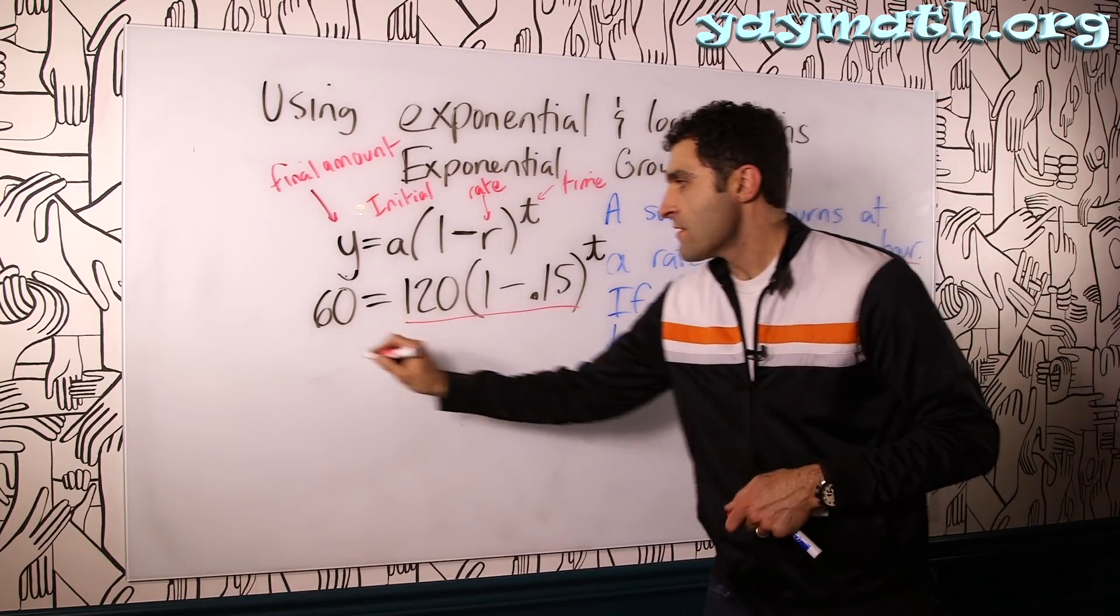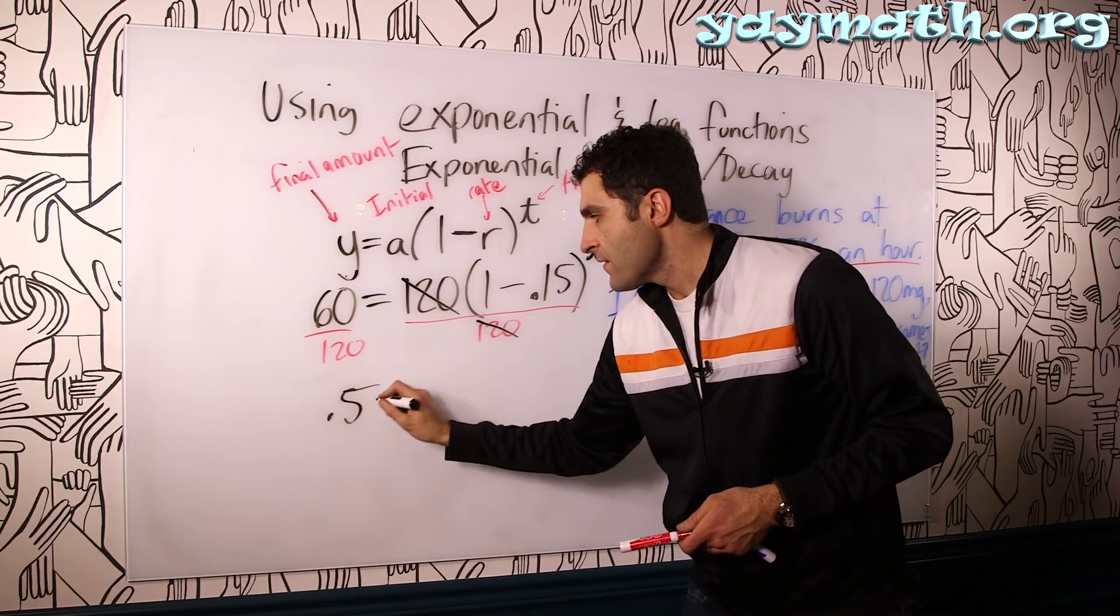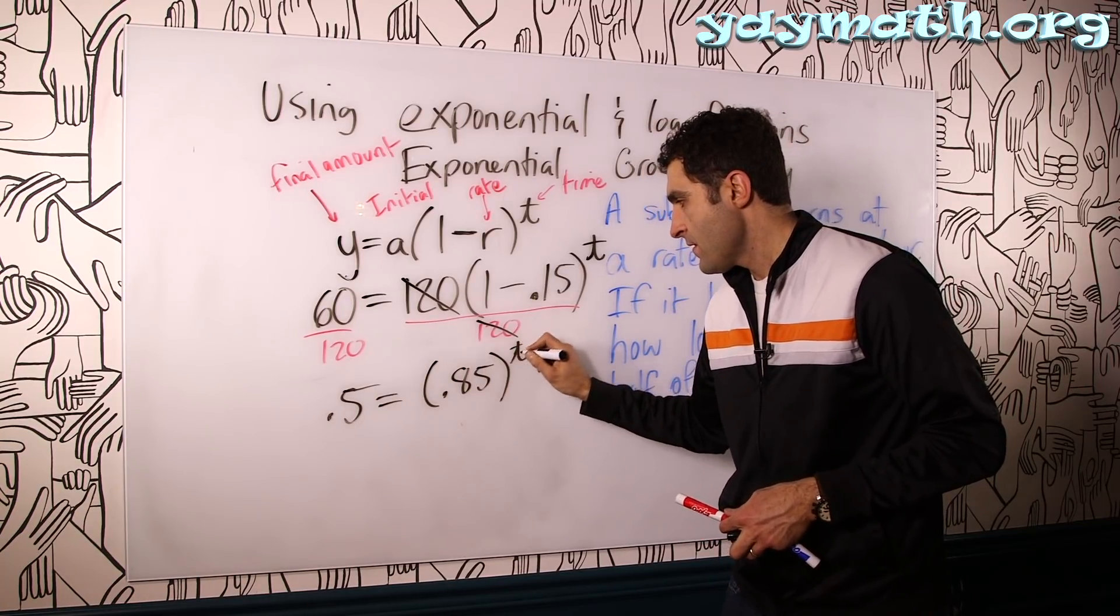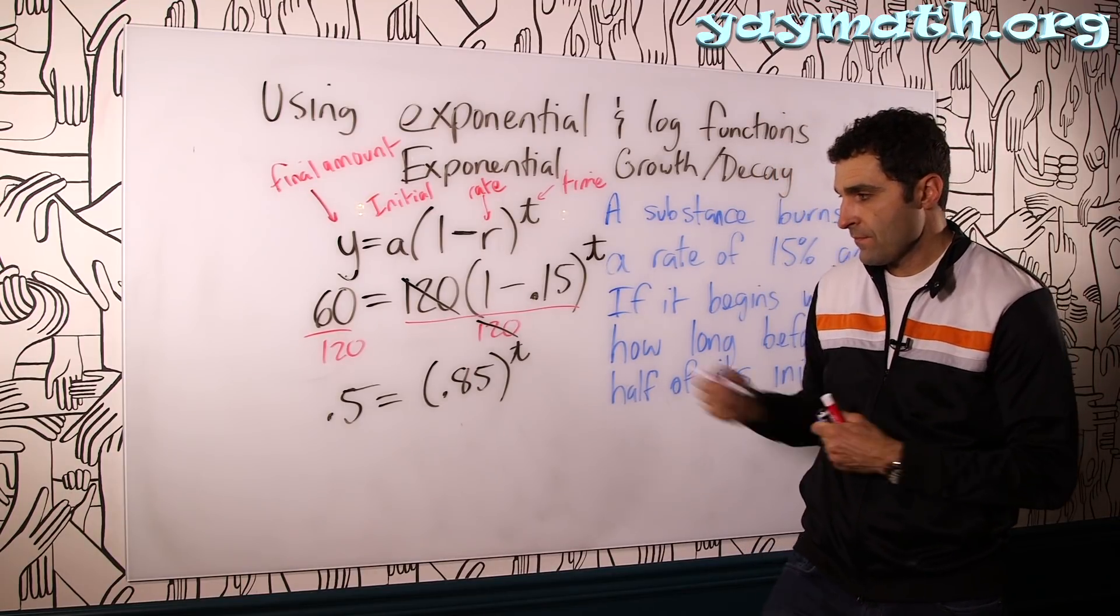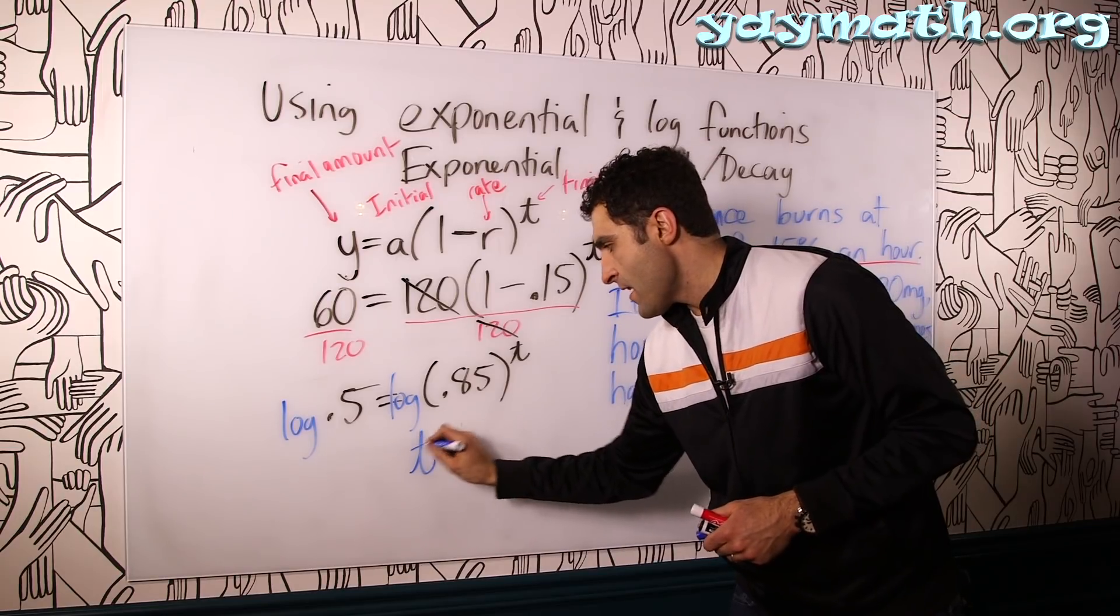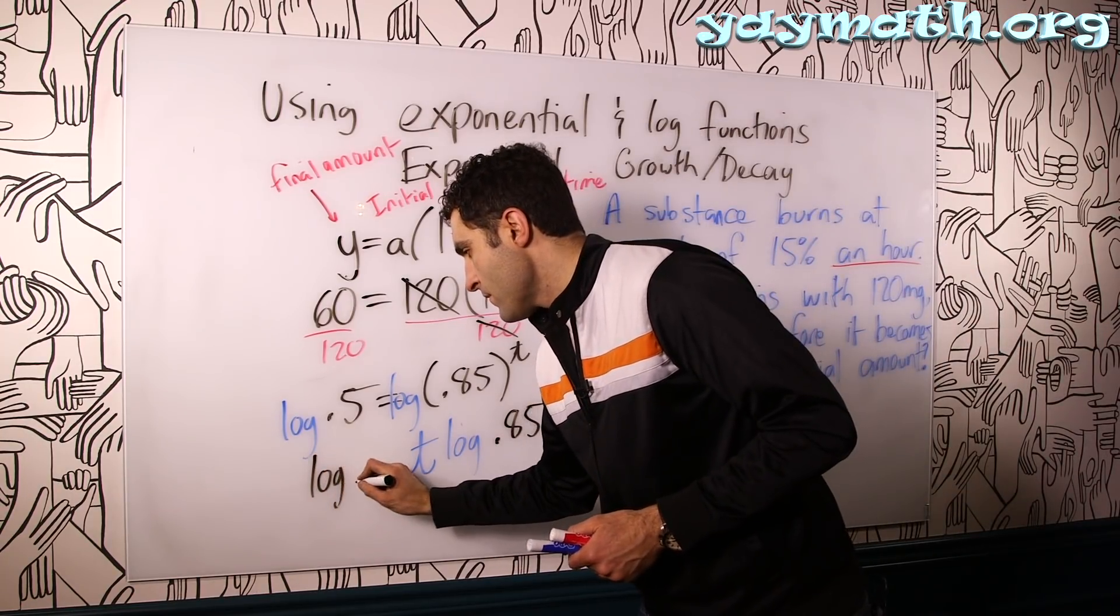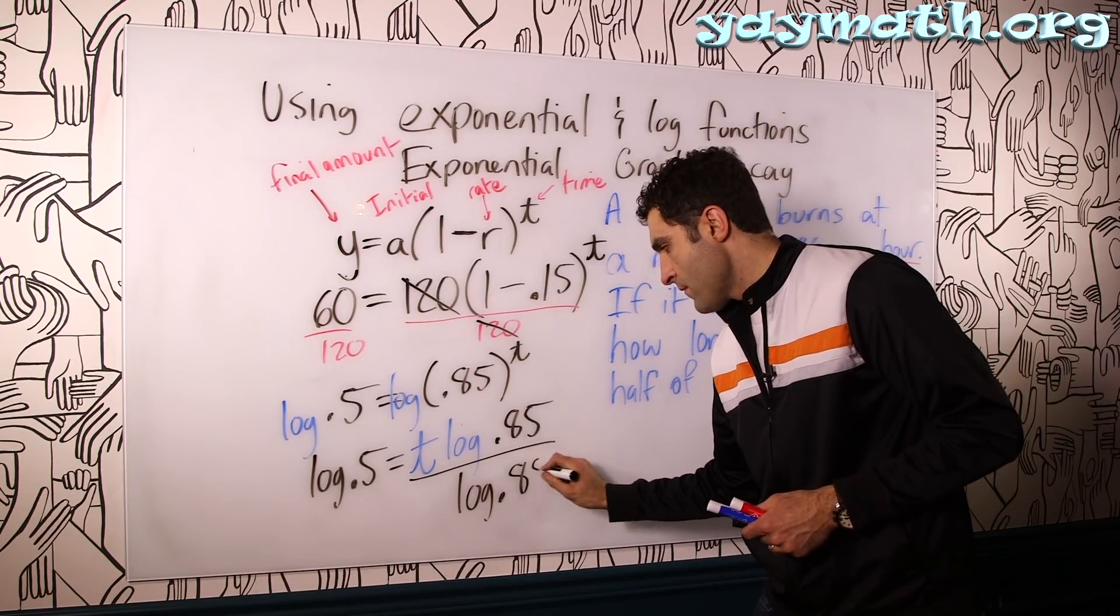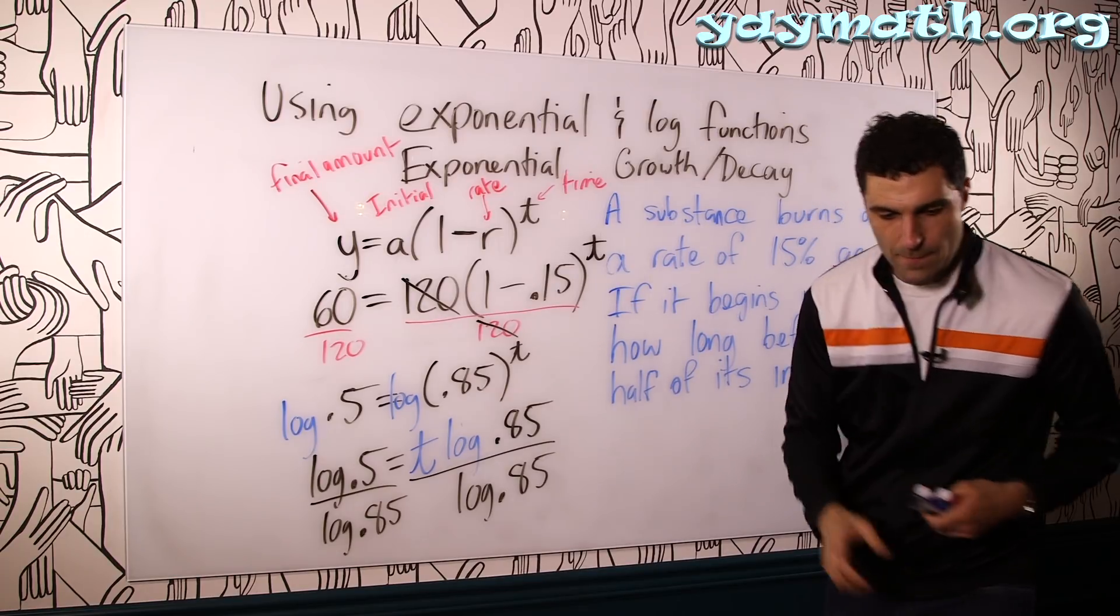So let's go ahead and solve. We can divide both sides by 120 to simplify our lives. So this is 0.5 equals 1 minus 0.15 is 0.85. So that's 0.85 to the T. The way to solve these is to use logs to our advantage. So if we take the log of both sides, log here and log here, this T can move down in front of the log. So that becomes T times log of 0.85. And this is log of 0.5 equals. And if we want to get T by itself, we divide both sides by log of 0.85.